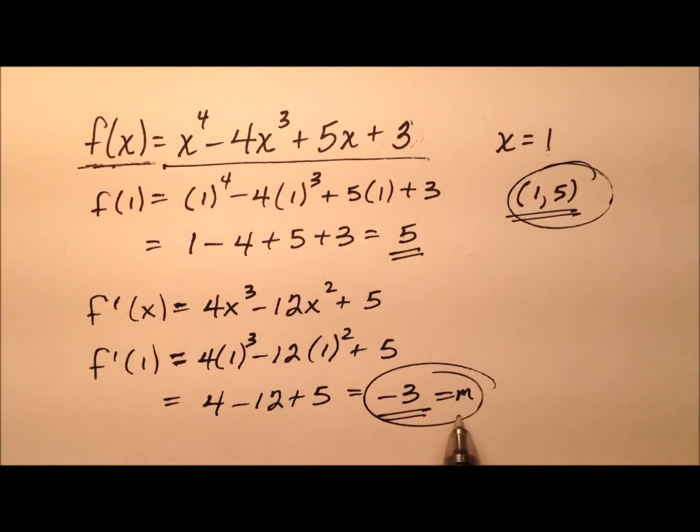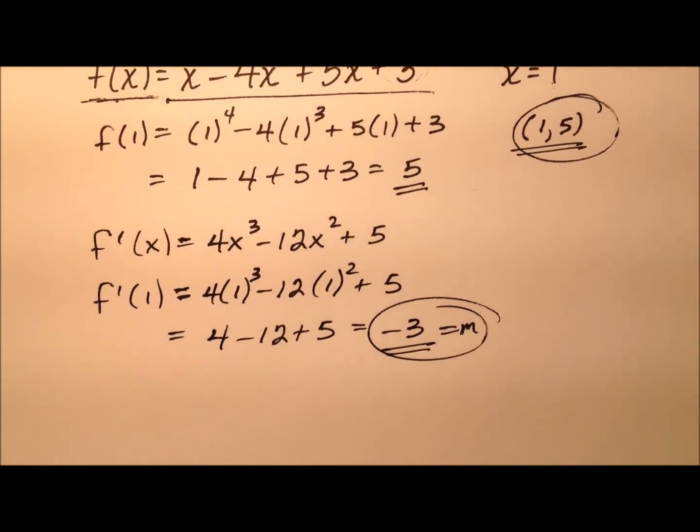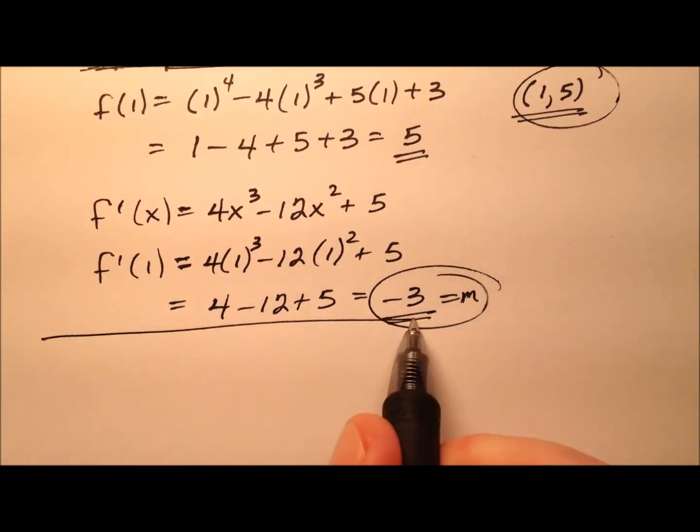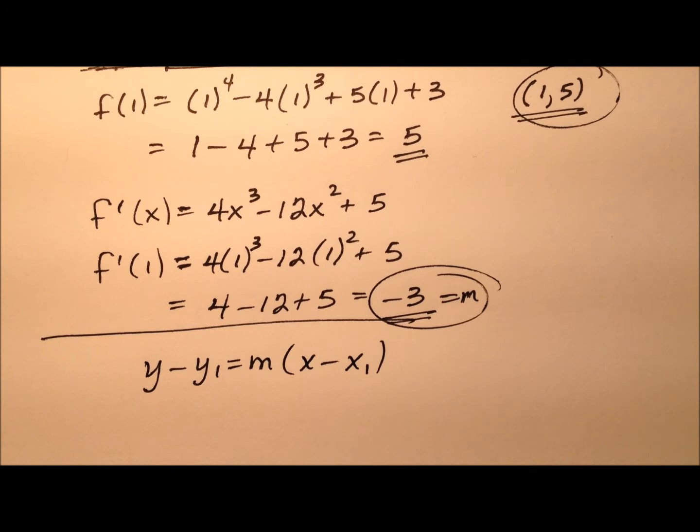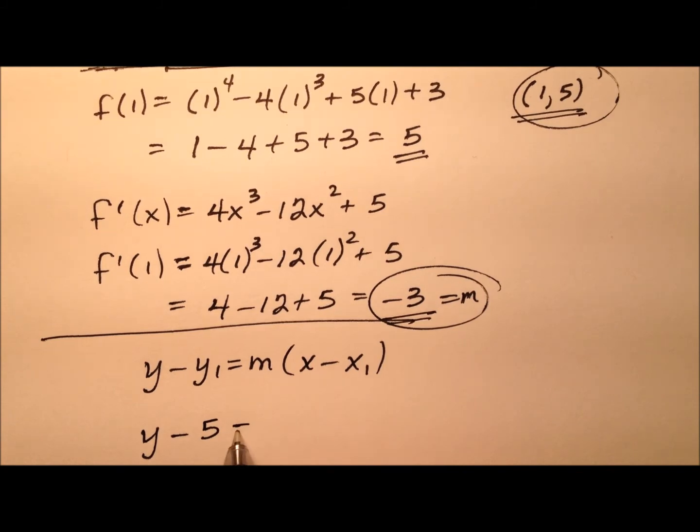So I have the ordered pair, and I have the slope, so it looks like I'm ready to write the equation of the line y minus the y value equals the slope times the quantity x minus the x value. And this is just point slope form. So it will be y minus 5 equals negative 3 times the quantity x minus 1.